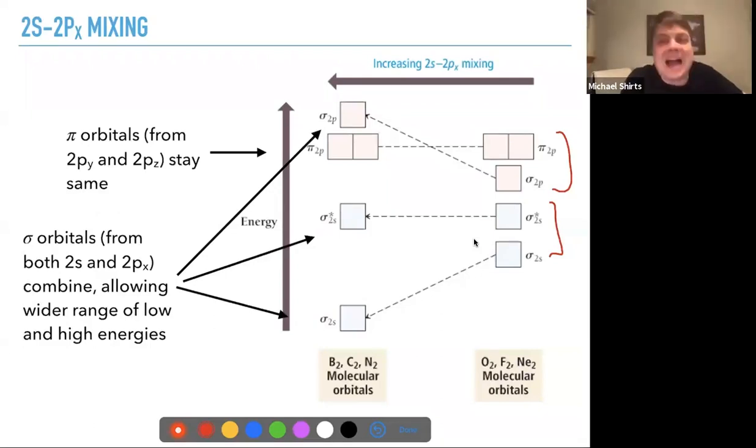So, the exact why it goes up and why it goes down is, obviously, you need to do careful calculations to get those energy levels right. The reason, though, is important, that is for B2, C2, N2, there is more 2s, 2px mixing.